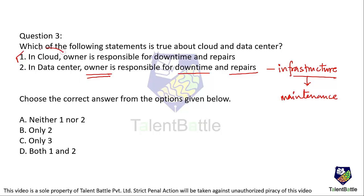Whereas cloud is a kind of service built and maintained by cloud service providers like Amazon Web Services and Google Cloud. They are responsible — the owner is not responsible for downtime and repairs in cloud. So the first statement is not true; the second statement is true. Therefore option B is the correct answer.